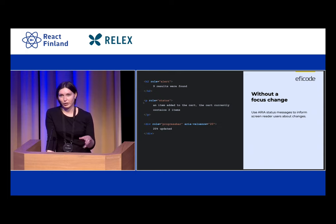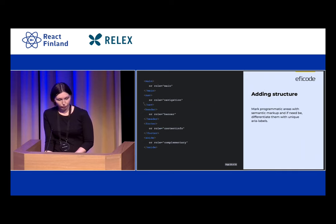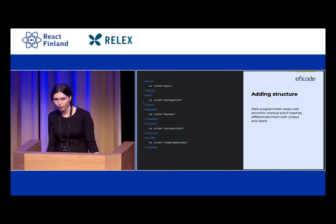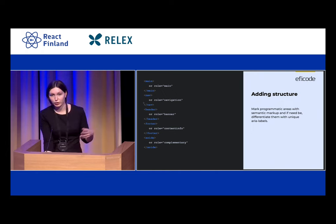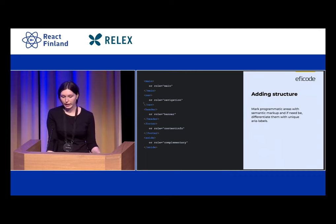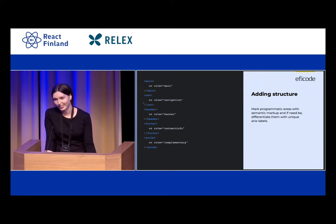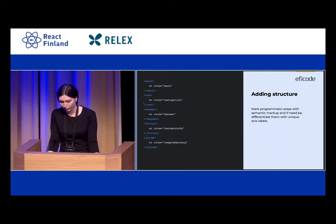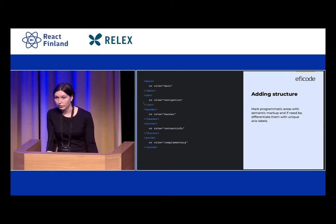There is also an alert dialog which requires the user to confirm they have read it. For general page structure, everything on your page should be contained in one of the programmatic landmark areas using semantic markup — avoid roles whenever you can. Use the main tag, nav tag, header tag, footer tag, and aside tag rather than their role equivalents. If you have two of the same type — like a site navigation and a main navigation — differentiate them with unique aria-labels so they don't get mixed up.